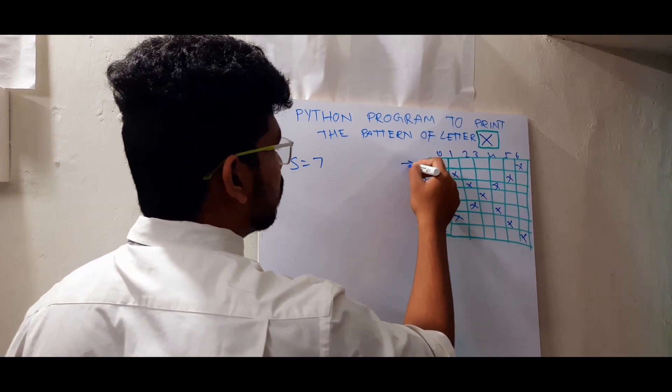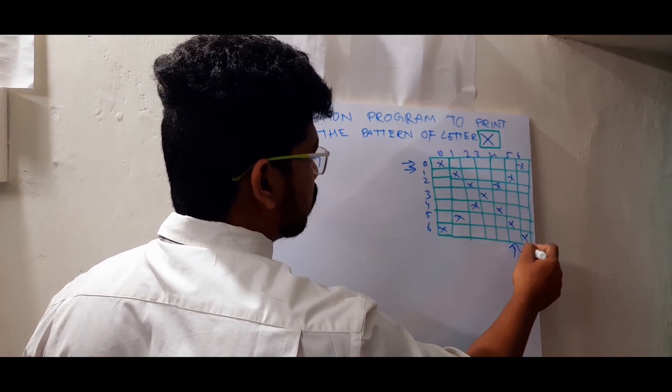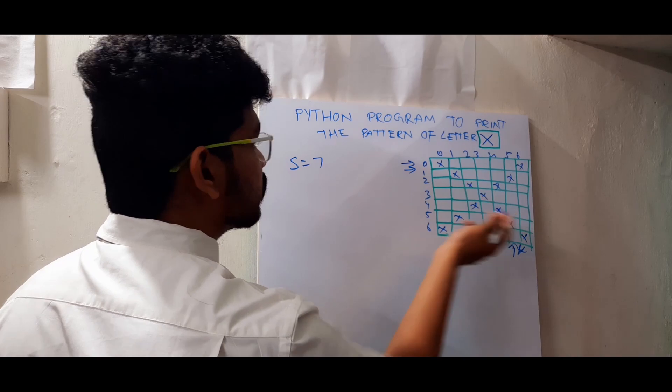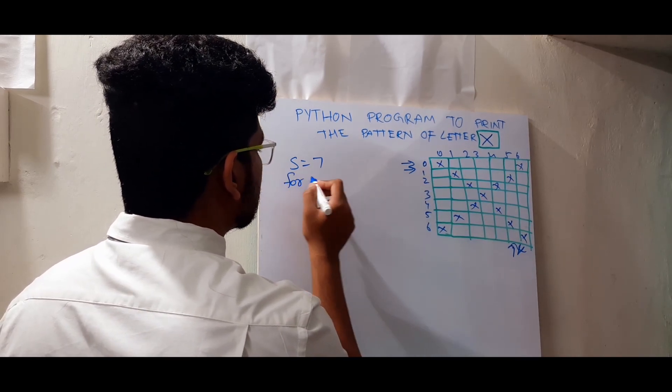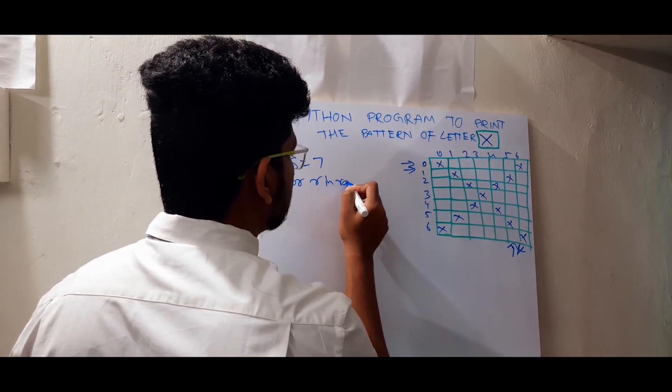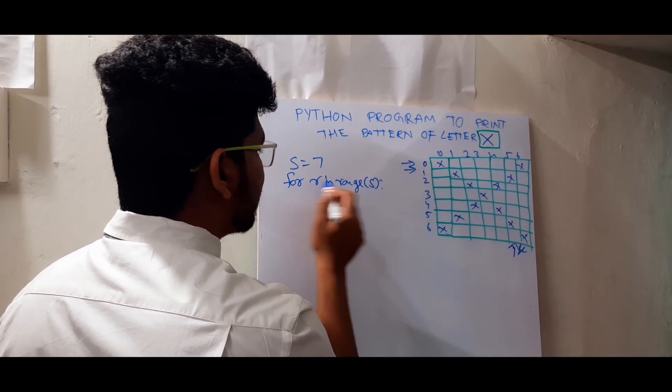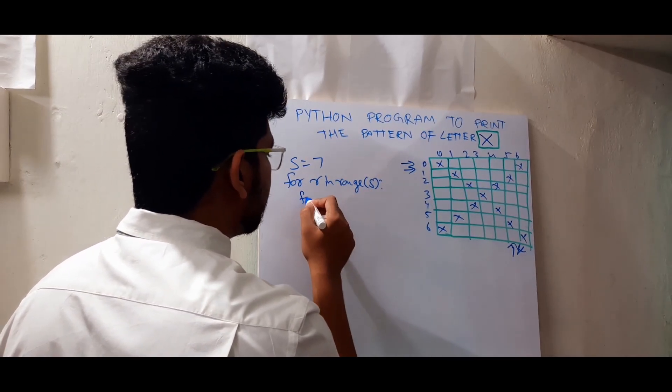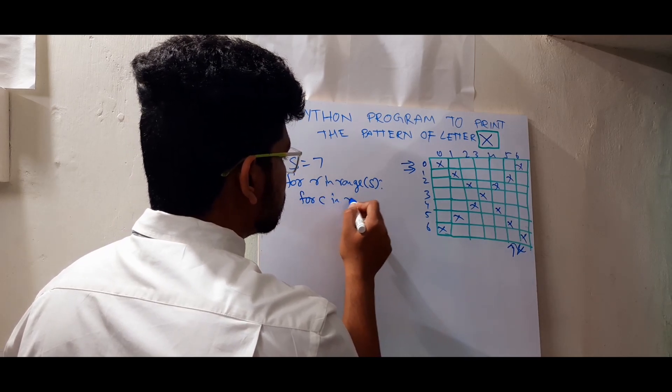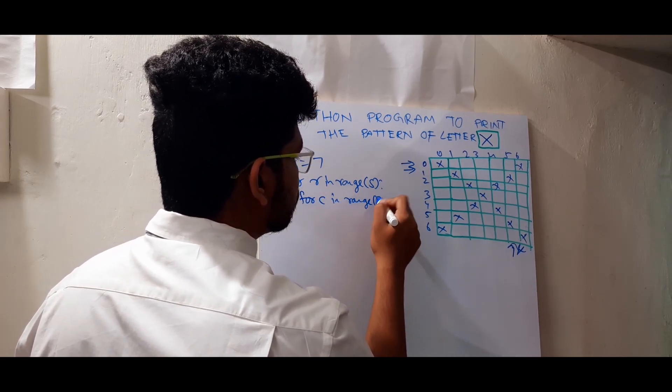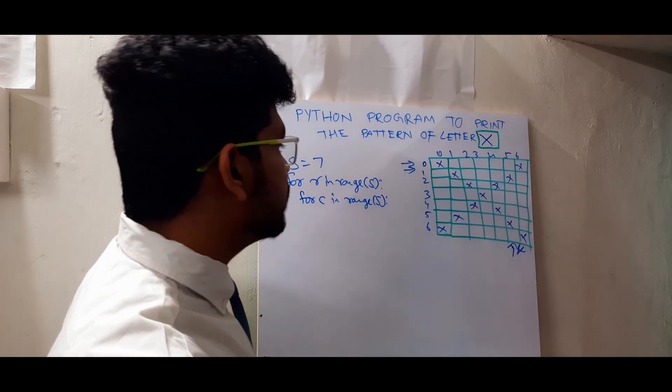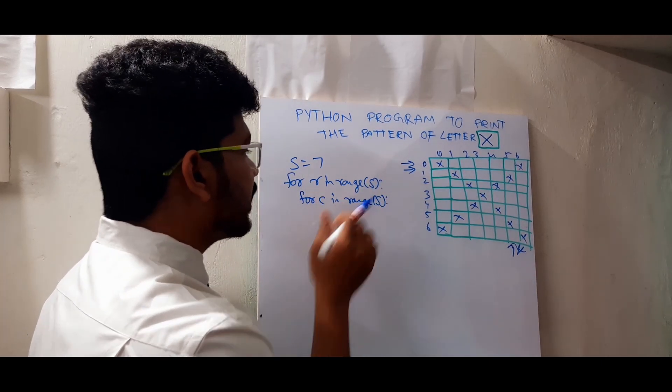So I need two loops. These are called rows and these are called columns. First I need to loop those rows and columns. For R in range S. S is the size here. R means for rows. And for C in range S. Here C is for columns. So I will loop rows and columns.